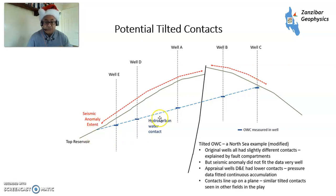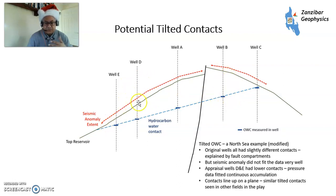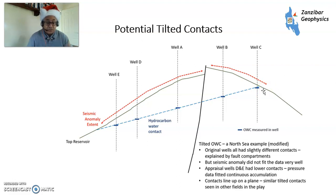The first is tilted contacts. Most hydrocarbon-water contacts are flat, but not all of them are. This is a North Sea example of a field I worked on. We had Wells A and B, we thought they were separated by a sealing fault, but the pressures and the seismic anomalies didn't add up. Then when we drilled Wells D and E, the contacts kept getting deeper, and when we drilled Well C the contact was a lot shallower than expected. When someone lined up all the contacts, it turned out to be a tilted flat plane caused by hydrodynamics within a very large aquifer. So look at the seismic anomalies and see if they add up with the contacts.